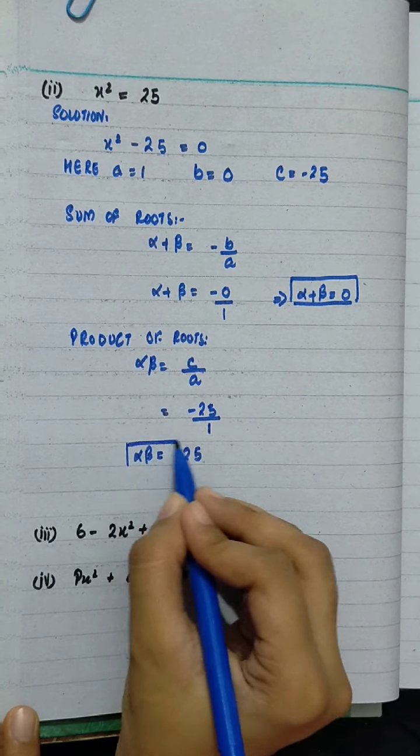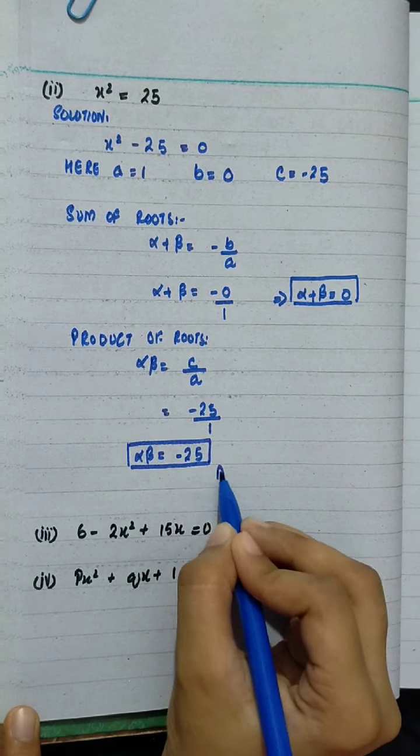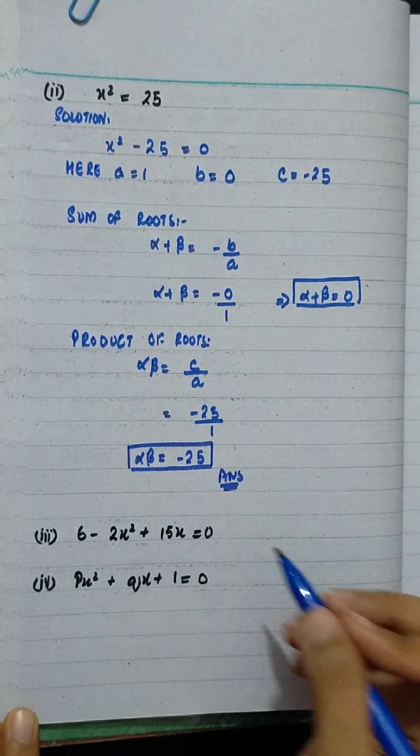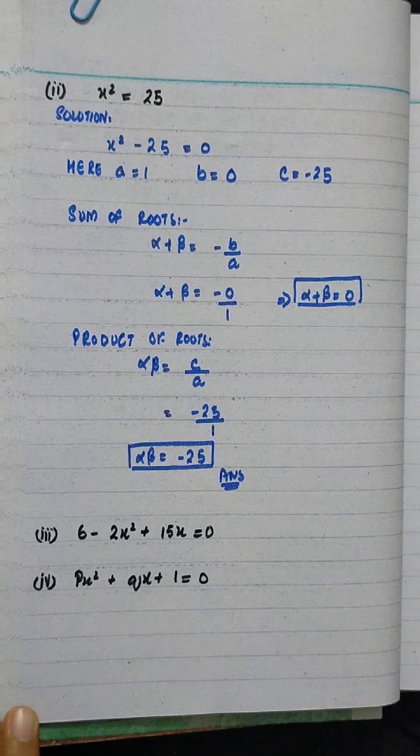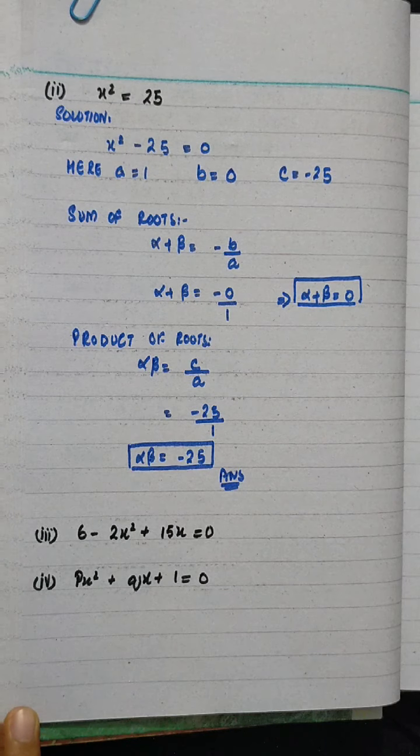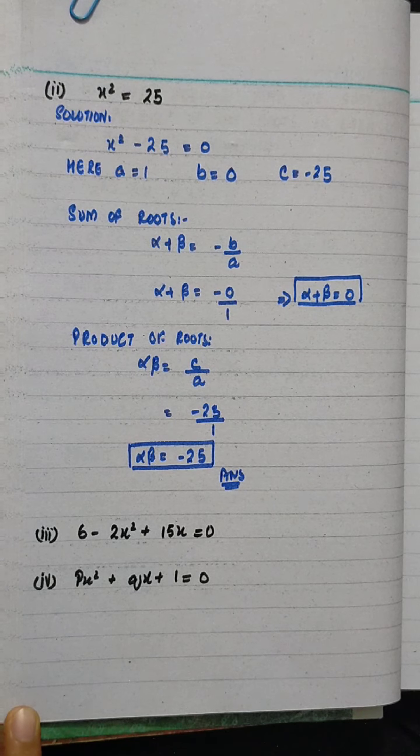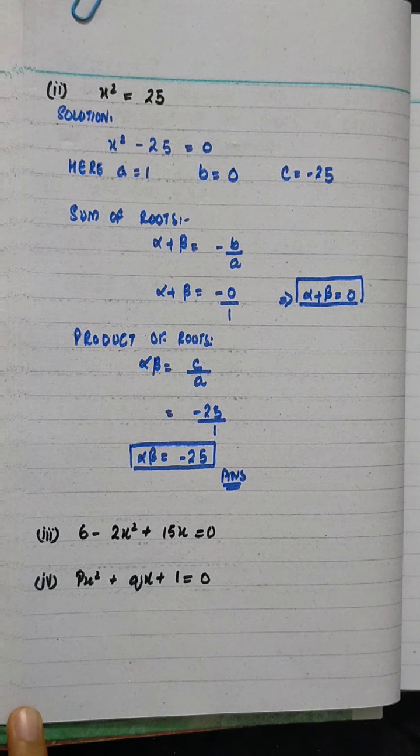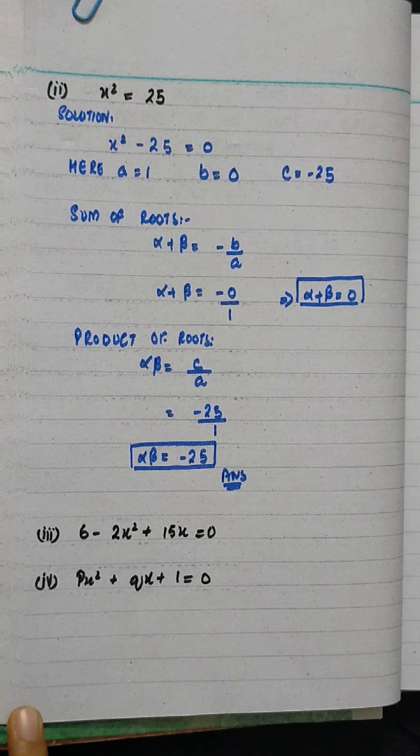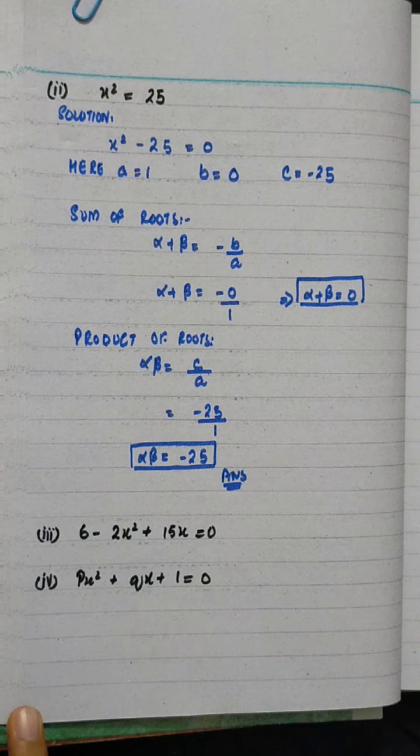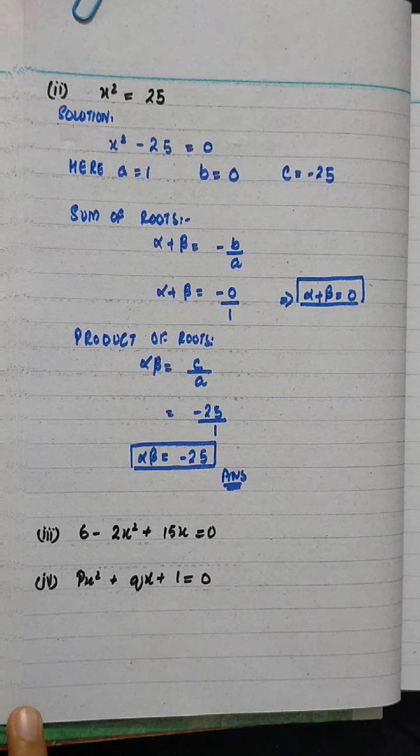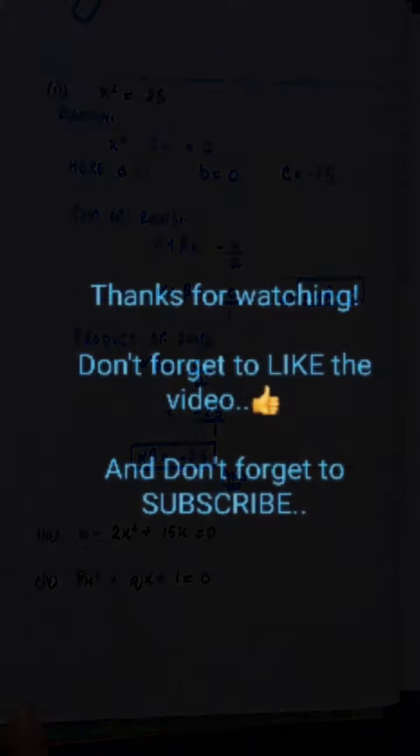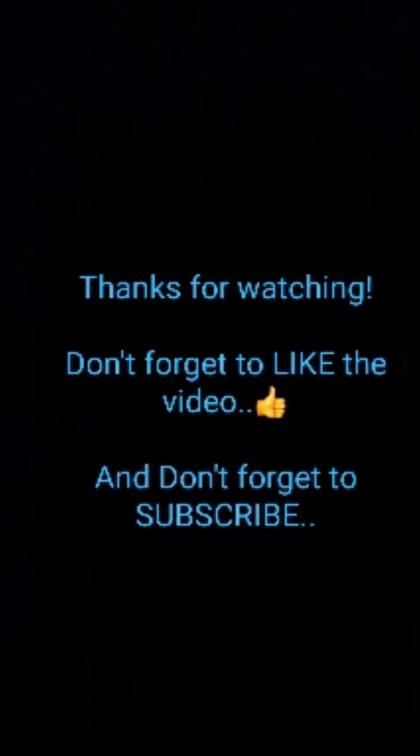For example, we have an equation ax square plus bx plus c equals to 0. What is this quadratic equation? Let alpha and beta be the roots of the equation. And if we add these roots, alpha plus beta equals to minus b over a. a is the coefficient of x square, b is the coefficient of x and c is constant.